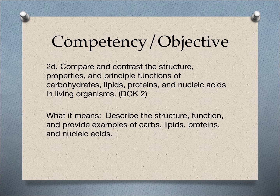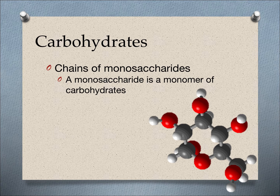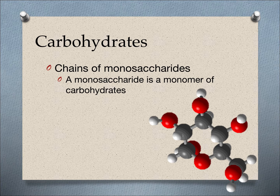In layman's terms, it means you're going to describe the structure, what it's made of, the function, and provide examples for each of those organic molecules. Monomers are the smallest part of a structure or a compound, and monomers make polymers, which are long chains of the monomers.